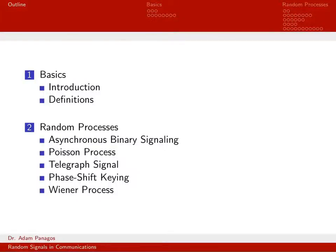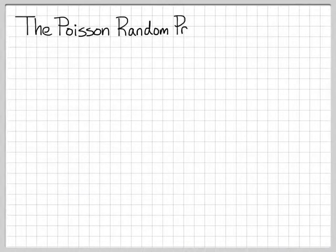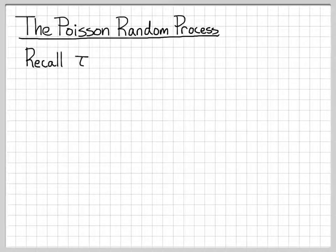The next random process we want to study in detail is something called the Poisson process. The Poisson random process is actually comprised and constructed from some random sequences that we talked about earlier in the class.